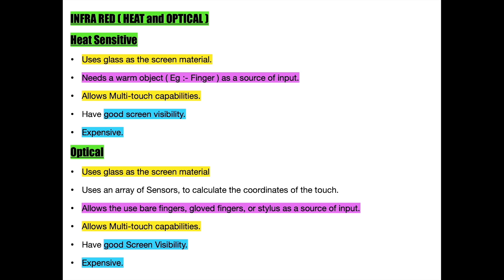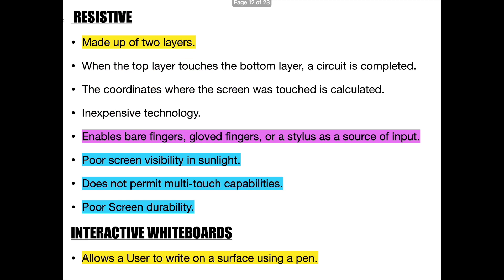Let us now talk about the resistive touch screen. This touch screen is made up of two layers; when the top layer touches the bottom layer, a circuit is completed and the coordinates where the screen was touched are calculated. The advantages of this technology are its low cost and its acceptance of bare fingers, gloved fingers, or a stylus as input. The drawbacks are its poor screen visibility and durability, and it does not allow multi-touch capabilities.